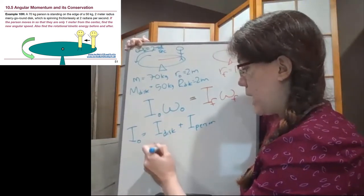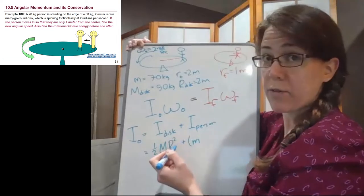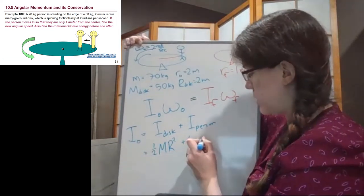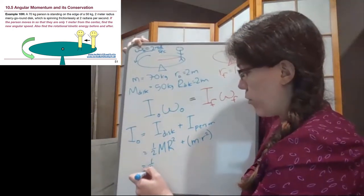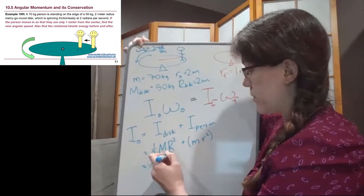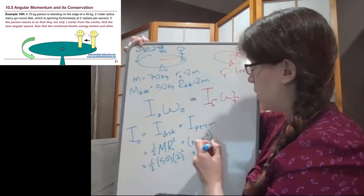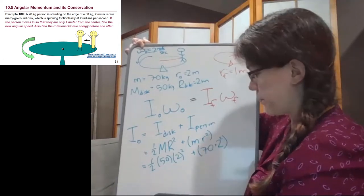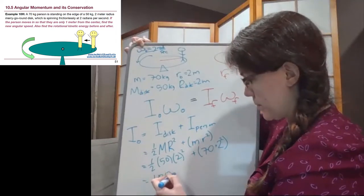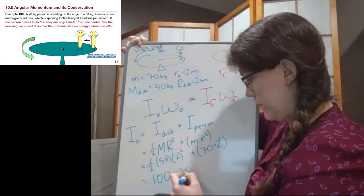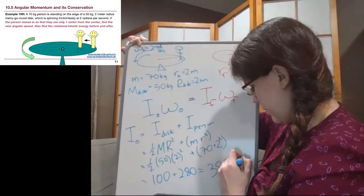So for a disc, we have one half big mass of the disc times big radius of the disc. And for the person, we don't have the one half term that is specific to a disc, but we do have that mass times that location radius squared. So we have one half times the 50 kilogram disc times two meters, plus we have 70 times the two meters squared. So one half times 50 times two squared is 100. And 70 times two squared is 280.